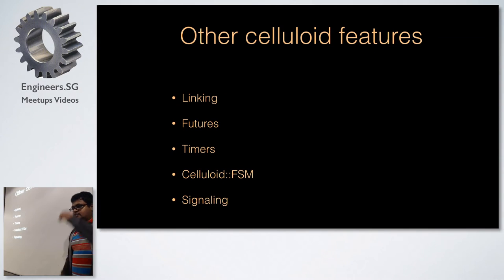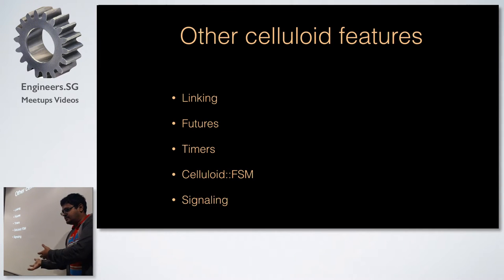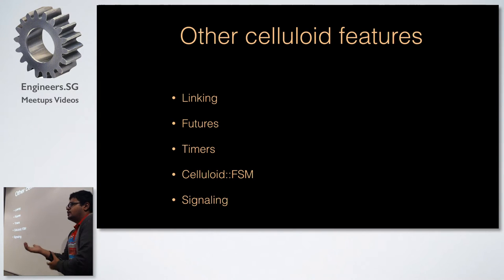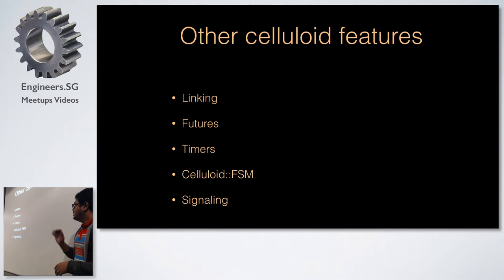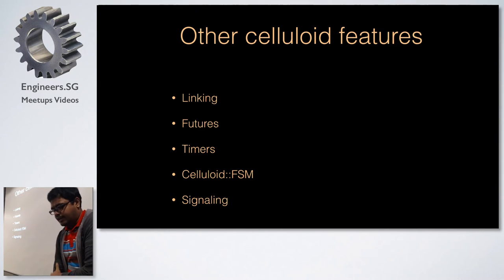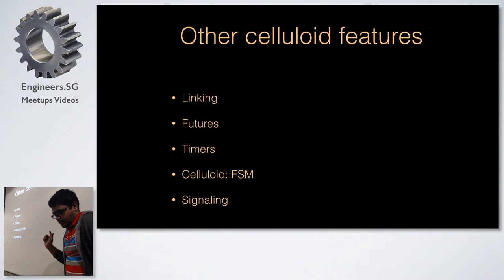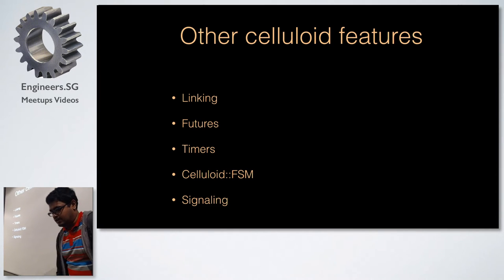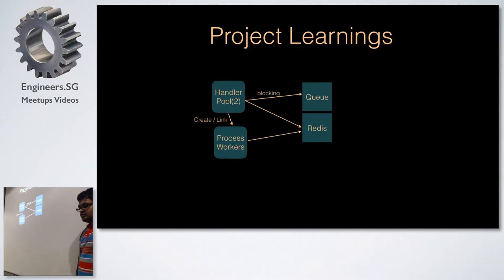Other Celluloid features include linking actors so that if one fails, another fails too; futures for asynchronous return values; timers for scheduling tasks; finite state machines; and signaling — though signaling is not recommended in Celluloid because it can easily cause deadlocks.